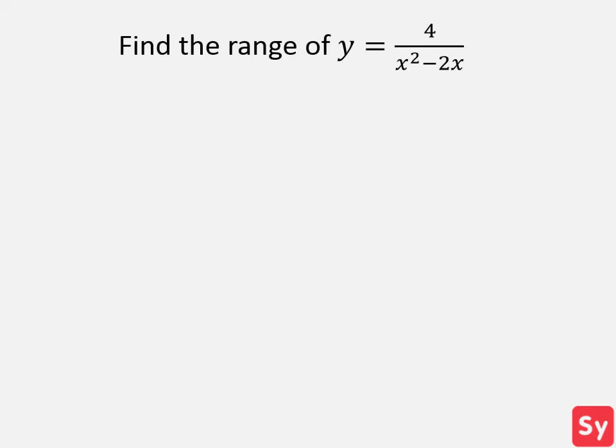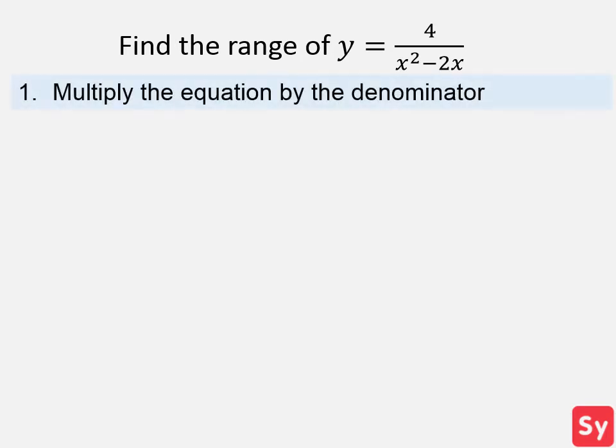Next example: find the range of the function y equals 4 over x squared minus 2x. Since the denominator is a quadratic expression, we first multiply the denominator to both sides of the equation.